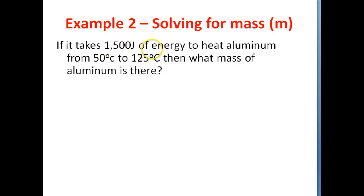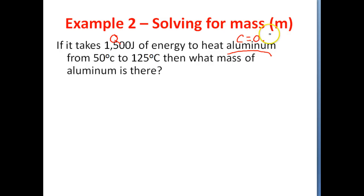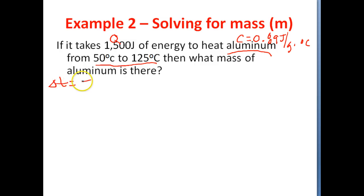If it takes 1,500 joules of energy to heat aluminum from 50 degrees Celsius to 25 degrees Celsius, then what mass of aluminum is there? In this problem we're solving for M. We have 1,500 joules — that is a measurement of thermal energy, or Q. The substance is aluminum, and from a table the specific heat of aluminum is 0.89 joules over grams times degrees Celsius. The aluminum is going from 50 degrees Celsius to 125 degrees Celsius, so delta T is 75 degrees Celsius. We are asked to calculate M.